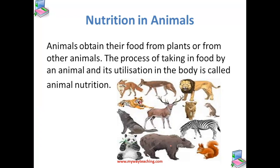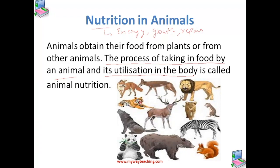As we know, animals obtain their food from plants or from other animals. This is required by them to gain energy for growth and for the repair of their body parts. Hence, we can define animal nutrition as the process of taking in food by an animal and its utilization in the body to gain energy for growth and repair.